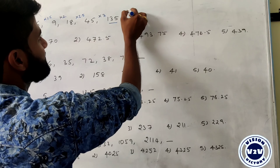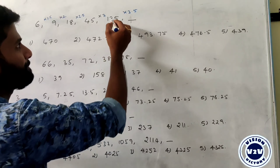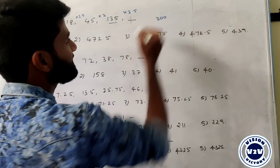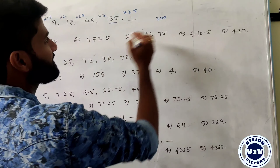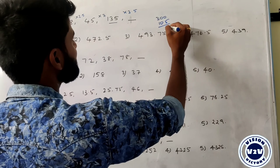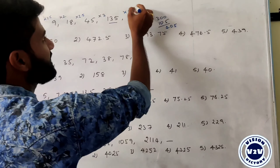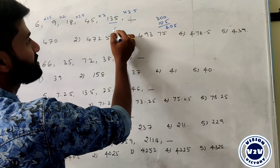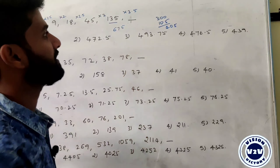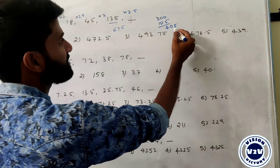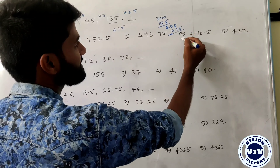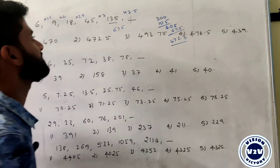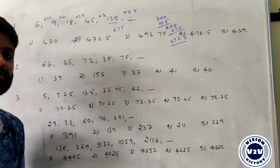So we need to multiply 135 by 3.5. 135 times 3 is 405, and 0.5 times 135 is 67.5. Adding these gives 472.5. So the answer is 472.5.